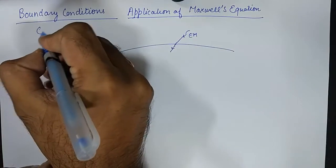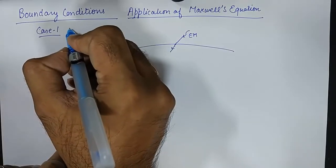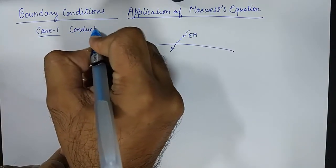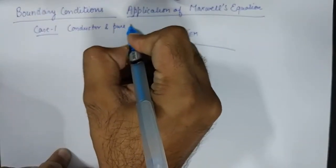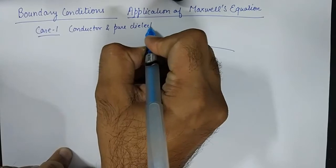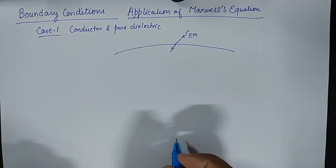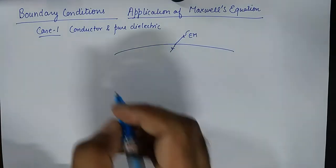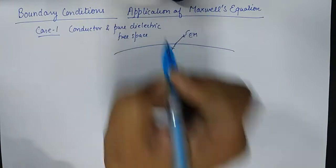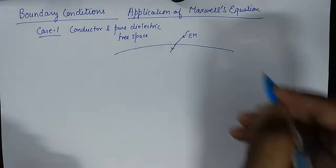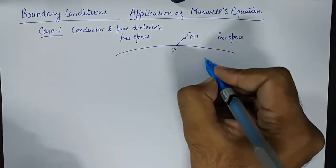In the first case, we'll study boundary conditions between a conductor and pure dielectric. This is also popularly known as the boundary condition between a conductor and free space. So we've got free space on one side and a conductor on the other.